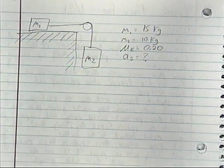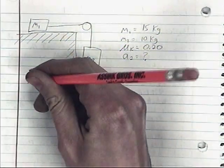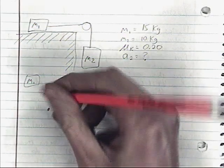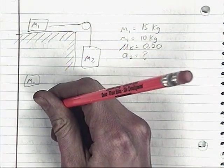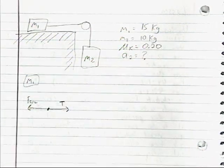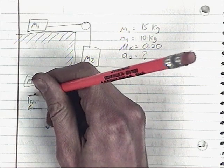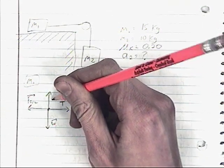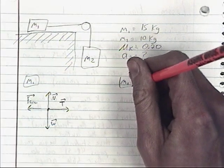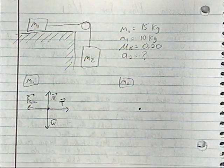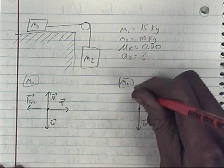With two objects in this problem, we start by drawing free body diagrams — one for each object. For mass one: tension from the rope pulls it to the right, friction resists that motion, gravity pulls it downward as a weight force, and a normal force acts upward preventing it from falling through the table. For mass two, it's simpler: gravity pulls it downward as a weight force, and tension acts upward.